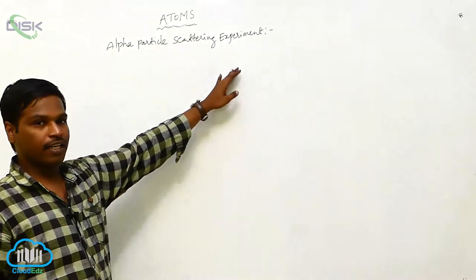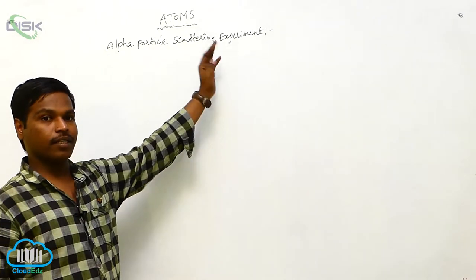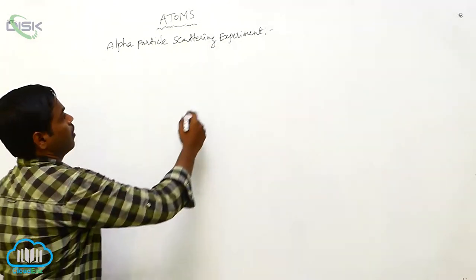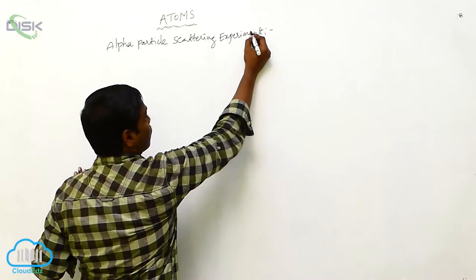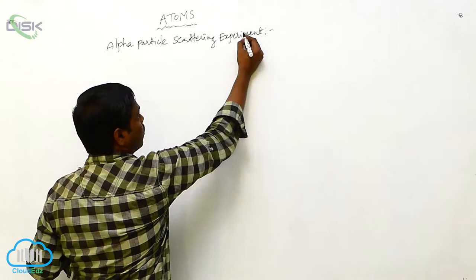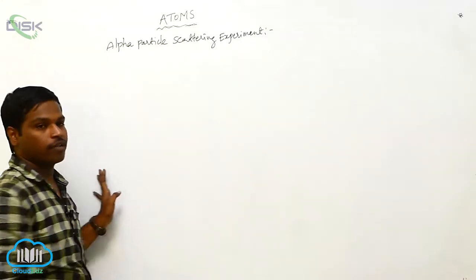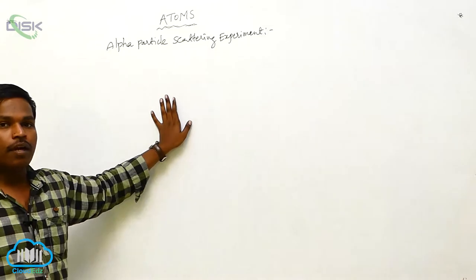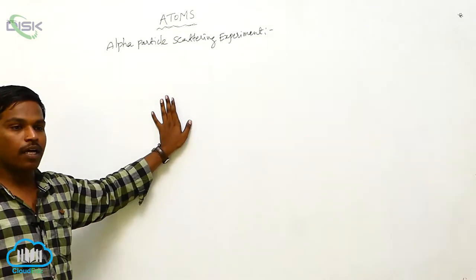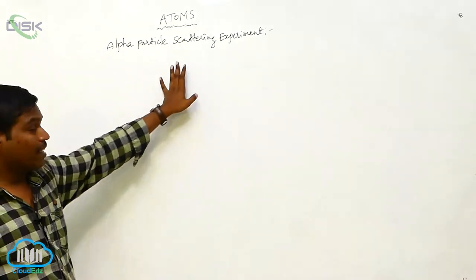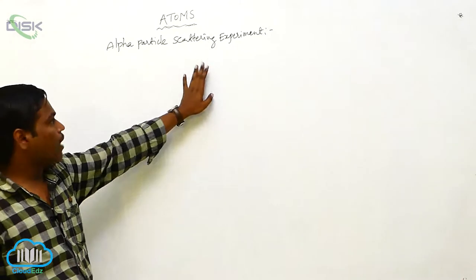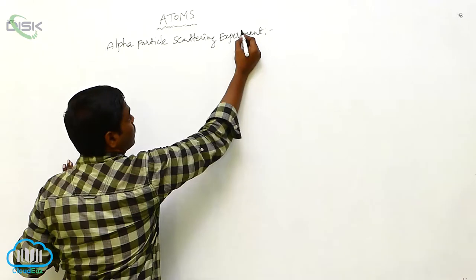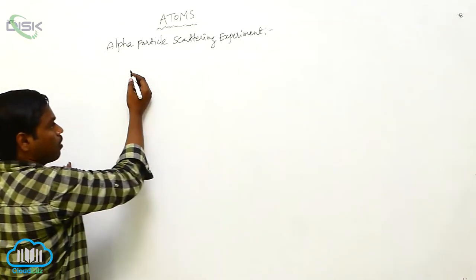The alpha particle scattering experiment was given by Ernest Rutherford in 1906, and this experiment was performed by Geiger and Marsden.